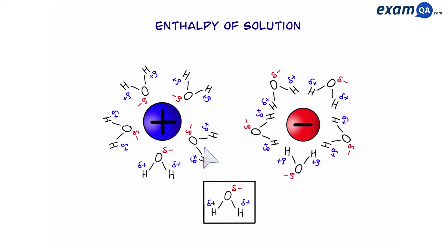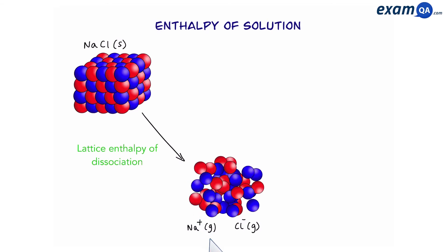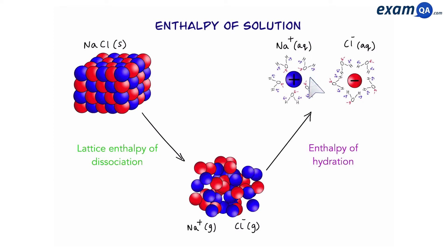So now we have two ions that have been completely surrounded by water. We had gaseous ions and now we have hydrated or aqueous ions. This is called enthalpy of hydration.